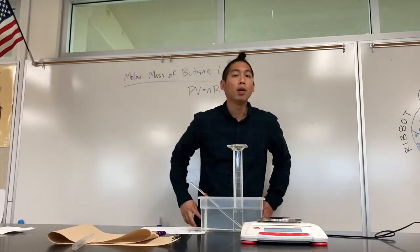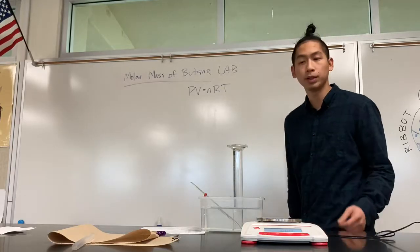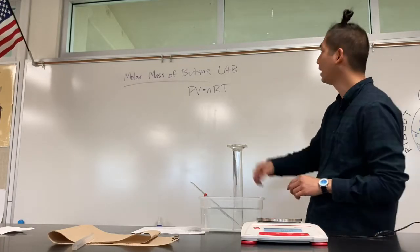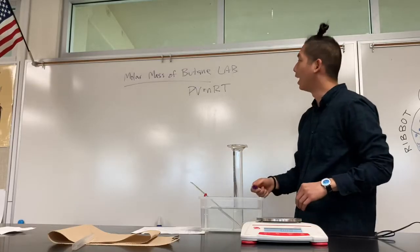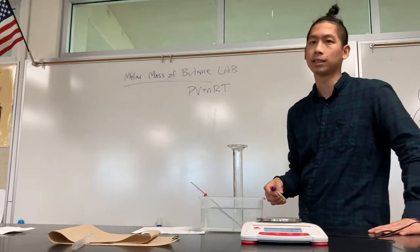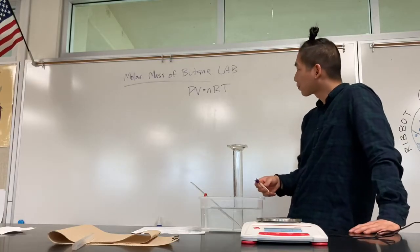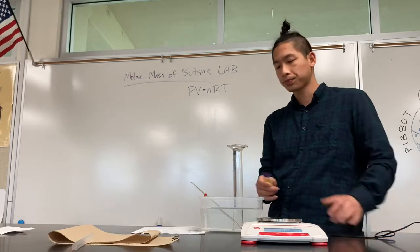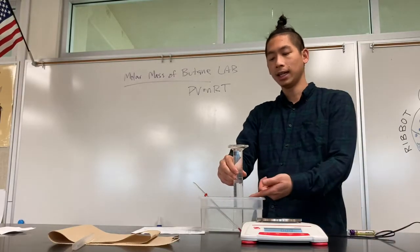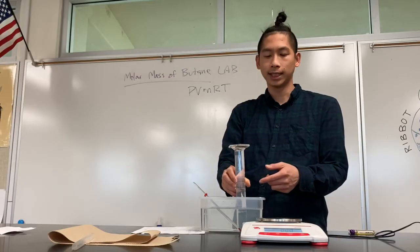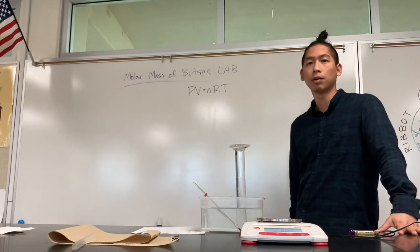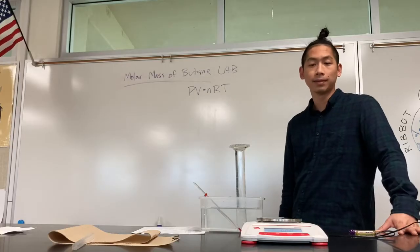Today we are doing the molar mass of butane lab. Butane is the gas found in everyday lighters, and we are going to use the ideal gas law — PV = nRT — to figure out the number of moles of butane. We can use a scale to figure out the number of grams, which will give us the molar mass (grams over moles). To do that, we'll take the pressure, temperature, and volume of butane by collecting about 50 milliliters in a graduated cylinder.